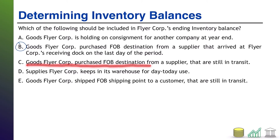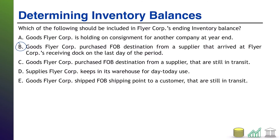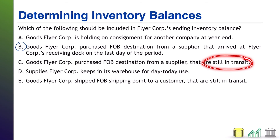Option C: Goods FlyerCore purchased FOB destination from a supplier that are still in transit — meaning still on the plane, train, truck, or whatever is carrying them. Again, we're buying, so we are the destination. They were shipped FOB destination, so legal ownership won't change hands until they get to us, but they're not here yet. They're still on the truck. Those don't belong to us yet, so we would not include them in our inventory.